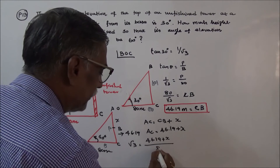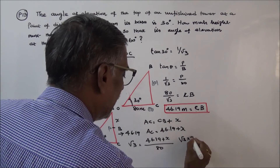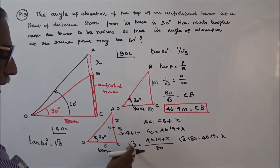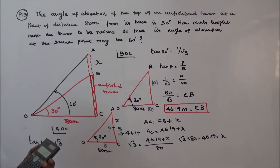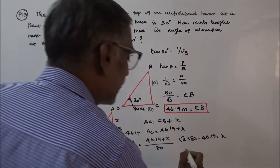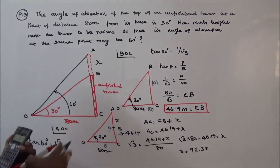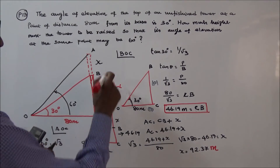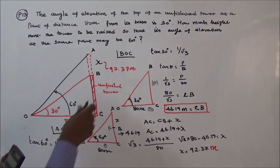Therefore X equals root 3 into 80 minus 46.19. That is equal to 92.37. So X equals 92.37 meters. That is the height that must be raised.